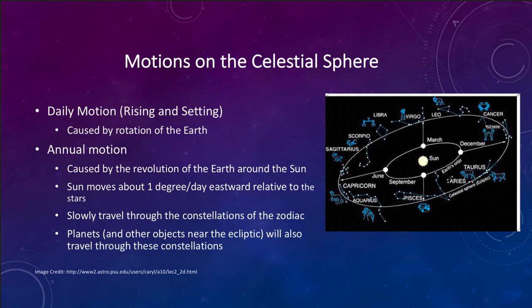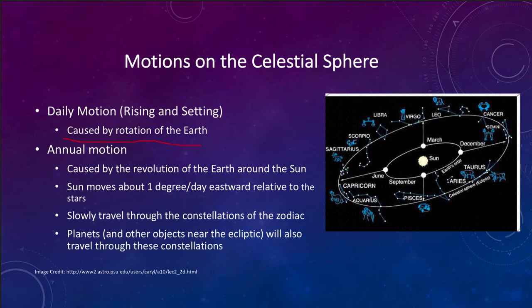Let's look at the motions we get on the celestial sphere. We get a daily motion — rising and setting — which is caused by the rotation of the Earth. The celestial sphere seems to orbit around the Earth once a day, but it really is the Earth spinning from west to east that makes celestial objects appear to rise in the east and set in the west.